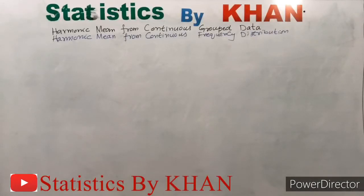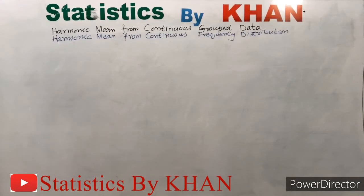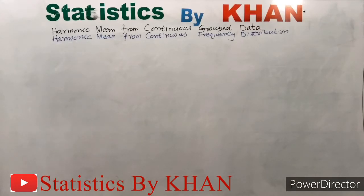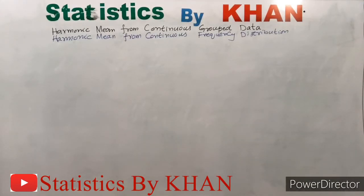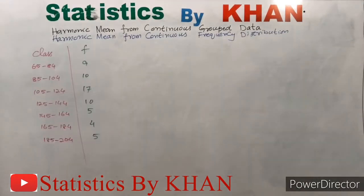Harmonic mean from continuous group data and harmonic mean from continuous frequency distribution are the same thing. For this computation, we will use the same data sheet that has already been used for the computation of arithmetic mean and geometric mean from continuous group data. So let's write: continuous group data or continuous frequency distribution.